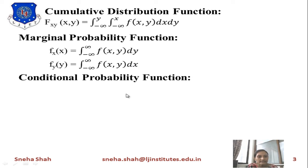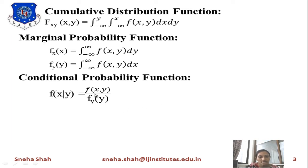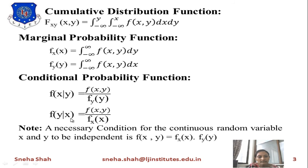The next point is the conditional probability function. If x is given and you need to find the probability of y, or if y is given and you need to find the probability of x, we use conditional probability. So f(x|y) equals f(x, y) divided by f_Y(y). Similarly, f(y|x) equals f(x, y) divided by f_X(x). A necessary condition for continuous random variables x and y to be independent is that f(x, y) equals f_X(x) · f_Y(y).